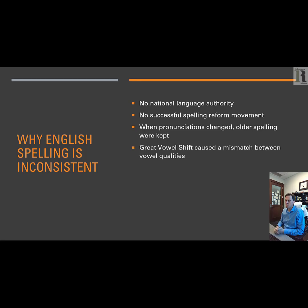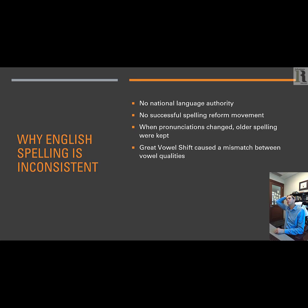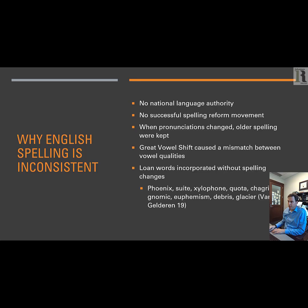The Great Vowel Shift caused a mismatch between vowel qualities. This is why the letter I, as in Iceland or Ireland or 'I am Professor Newman,' has that quality 'I' and not the sound 'E' that it has in every other language in Europe, pretty much. Except in a few cases in English, like 'machine' and 'chlorine,' the I makes that sound — but rarely. All our vowel sounds got changed around, but the spelling stayed the same. We didn't update the letters to match the sound.